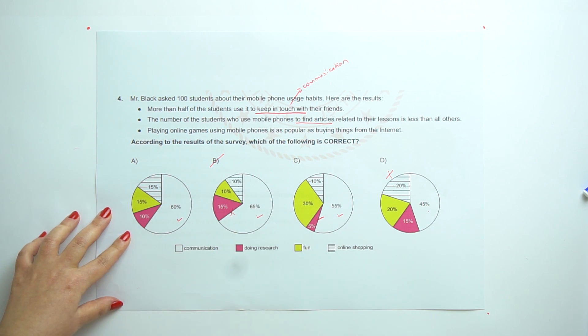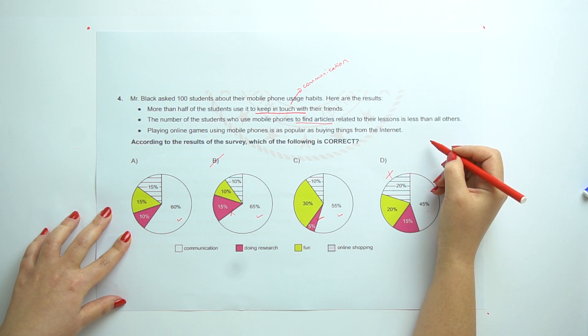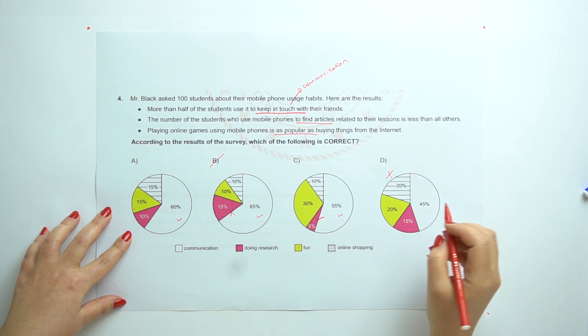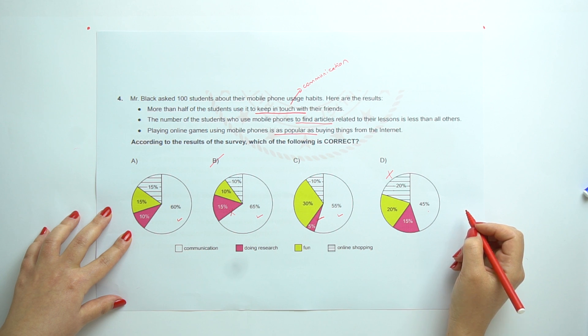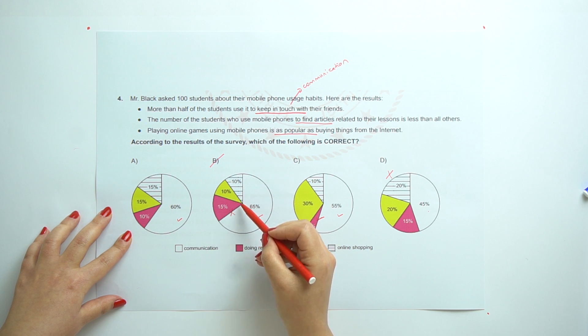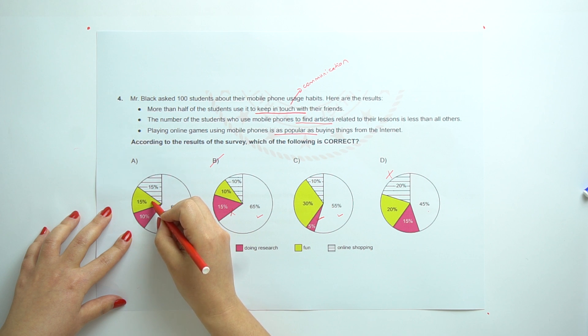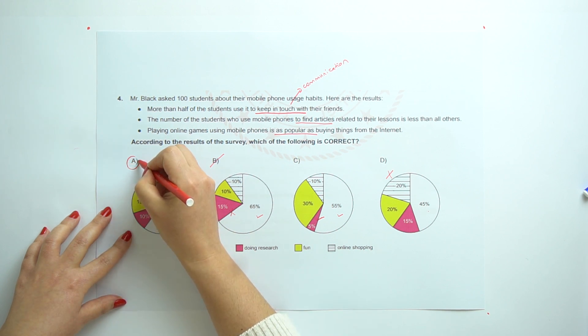And also, we have this one. And the next one. Playing online games using mobile phones is as popular as buying things from the internet. So, here we have as popular as. That means they are equal. So, let's have a look at. So, we cannot this one. Sorry, we cannot this one. And yes, here is fun and online shopping are the same. So, the answer is A.